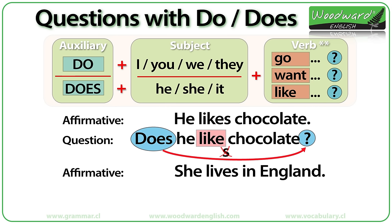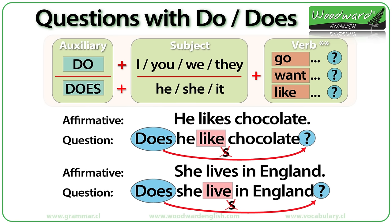She lives in England. How do we change this to make a question? We need DOES at the beginning because it is a question that refers to SHE. The verb LIVES becomes LIVE because it is the base form of the infinitive. Does she live in England? Again, there is no S after LIVE.